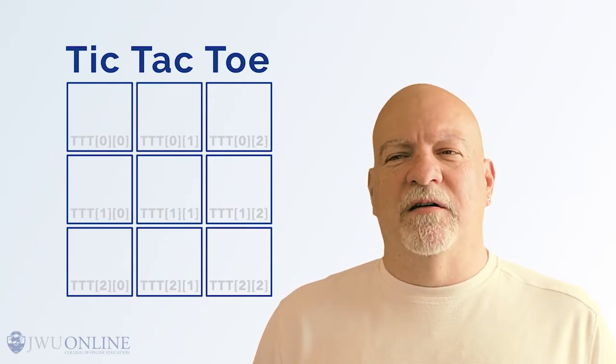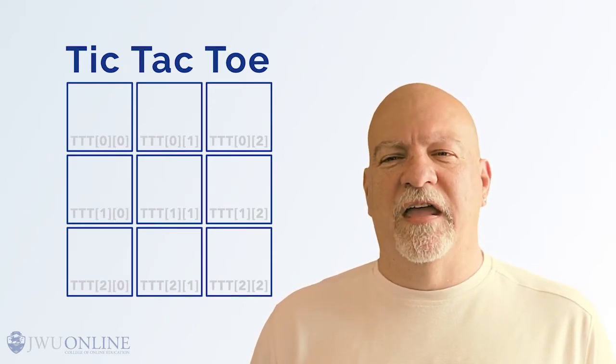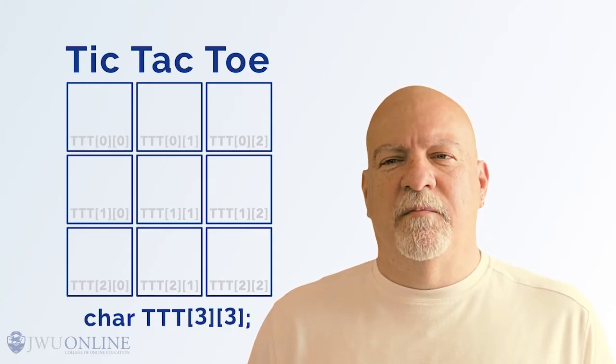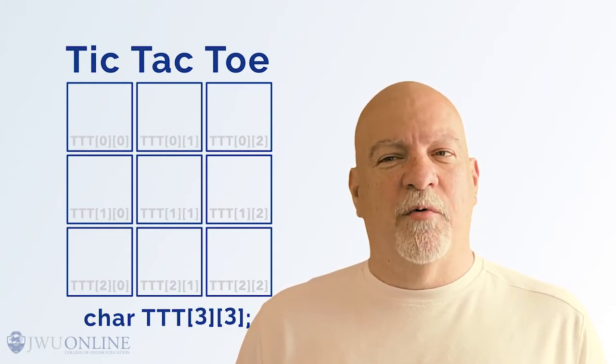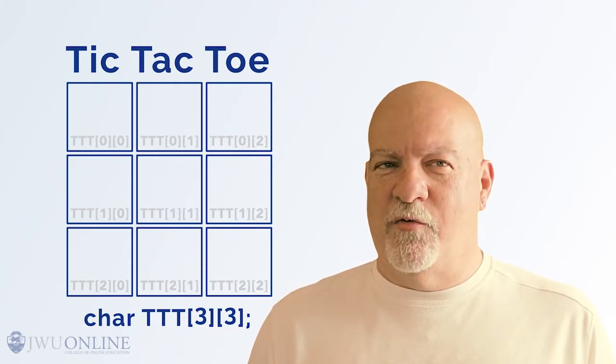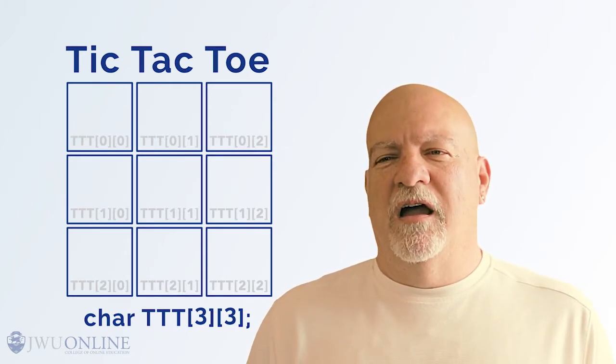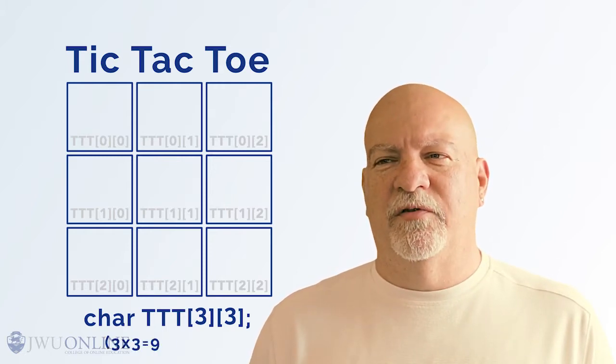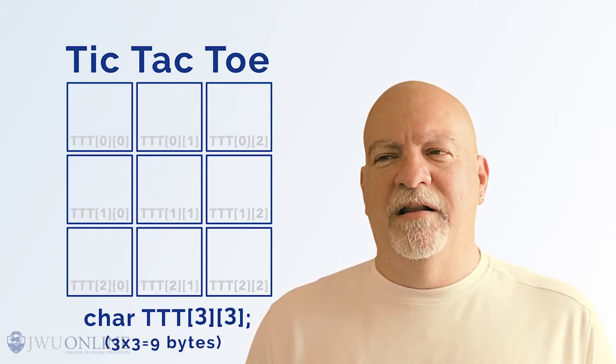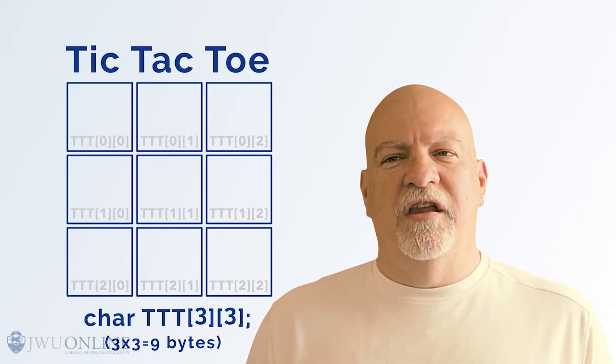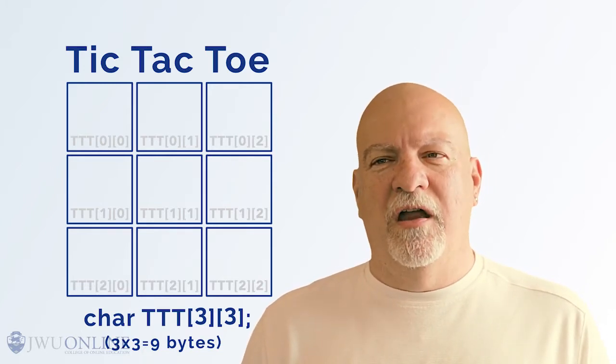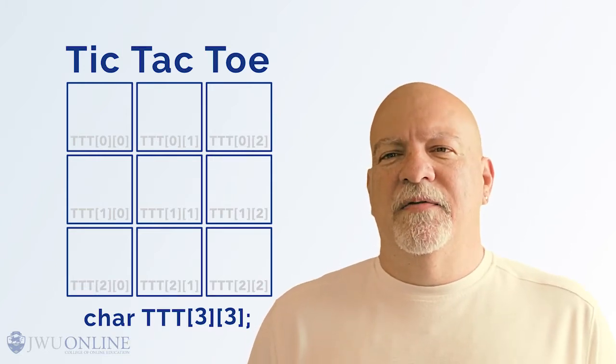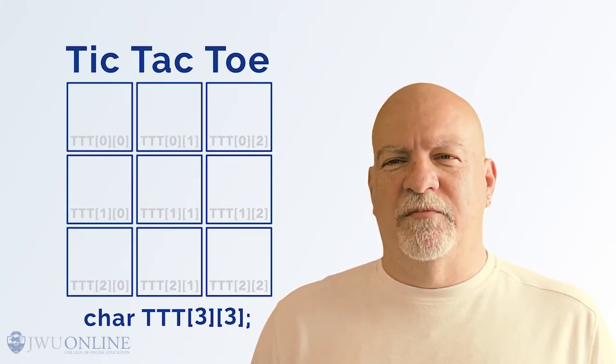In the C programming language, we accomplish this by saying char ttt square bracket 3 square bracket square bracket 3 square bracket and of course we end with a semicolon. Again, this means assign three by three character types, which again is one byte in length. So assign nine characters or nine bytes and call them starting at ttt. This is where the abstraction comes in.